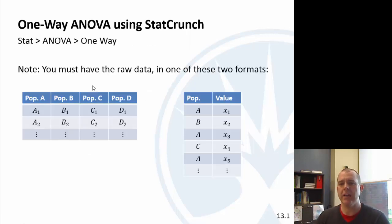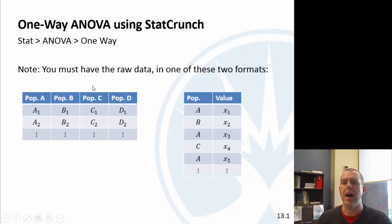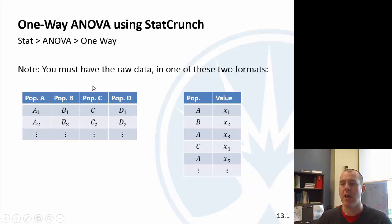If you want to use data in StatCrunch, there are two ways to input it. You can either have all of population A in one column, population B in another, population C in another, and so on. Or you can have two columns where the first column is the population label and the second column is the actual value you're comparing. Those are the two ways your data can be entered.